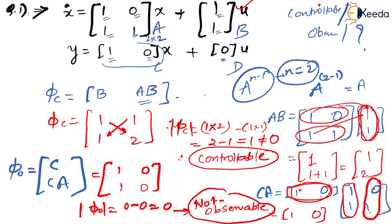Moral of the story: a system can be controllable but not observable, or it may be observable but not controllable, or it may be both controllable and observable. We will take many sums on this. This is the way we have seen the example regarding controllability and observability. Thank you.